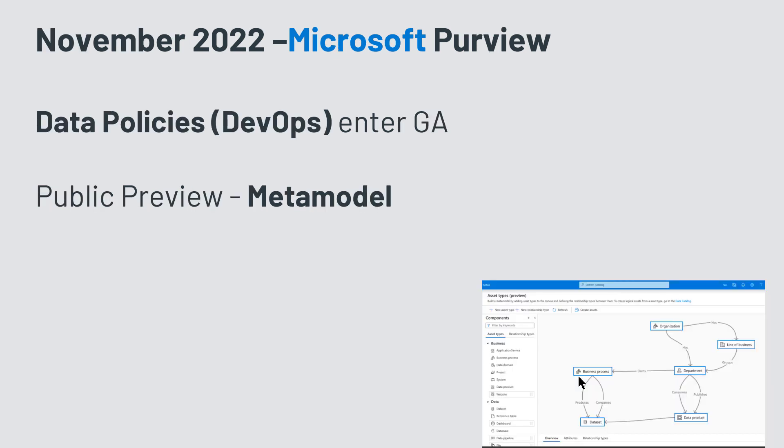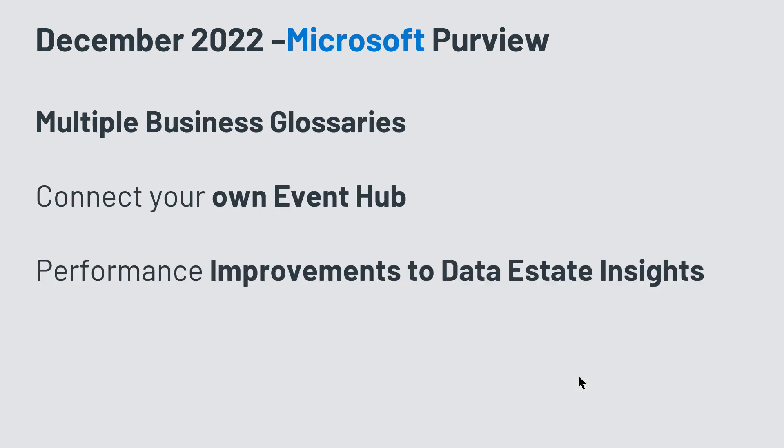In November, the SQL DevOps policies went into GA, and there was the public preview of the meta model. We got more information on how the meta model works, how it fits into the data catalog, and options to try it out in our own environments. In December, to finish the year, support for multiple business glossaries in the Purview data catalog was introduced. You can now connect your own event hub to listen to events that Azure Purview scans send and react to those. There were also performance improvements for better rendering and data generation, saving you some money.